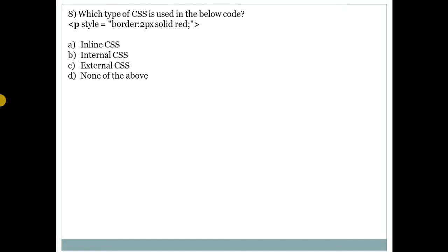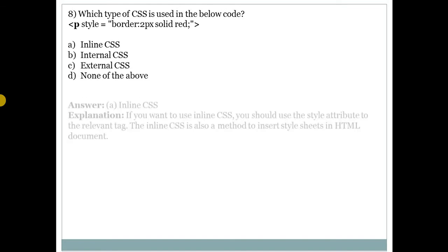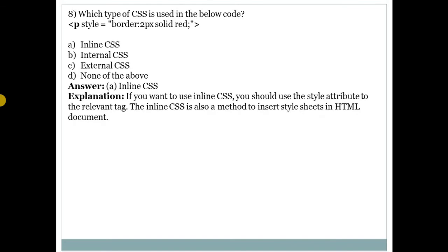Question number 8: which type of CSS is used in the below code? Answer is A — inline CSS. If you want to use inline CSS, you should use the style attribute on the relevant tag. Inline CSS is a method to insert style sheets in an HTML document. There are three types of CSS, and in the above code, inline CSS is used.